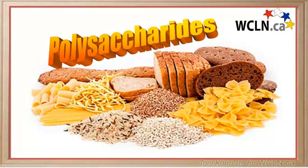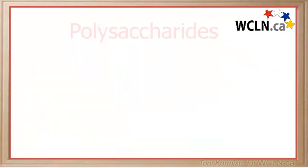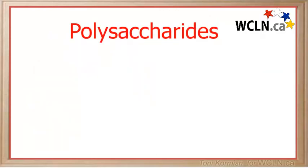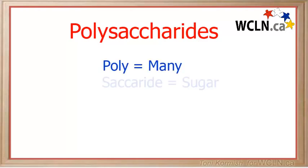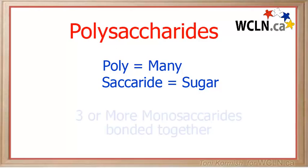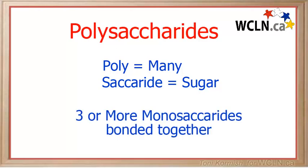The third and final group of carbohydrates are called the polysaccharides. The prefix poly means many, and saccharide, of course, is sugar. So the polysaccharides are large molecules of three or more monosaccharides bonded together.